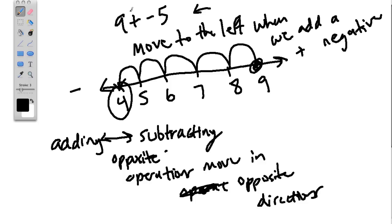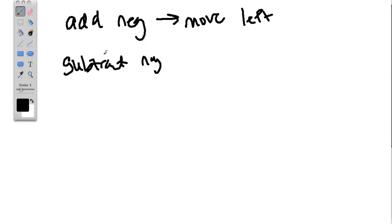So when we had 9 plus negative 5, we started at 9 and moved to the left five times when we added a negative 5. So we moved to the left when we added a negative number, which means that we move to the right if we subtract a negative. So if we add negative, that means we move left. If we subtract a negative, remember that's the opposite of adding, that means we have to move in the opposite direction or move to the right.